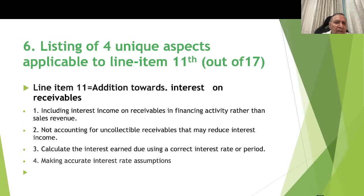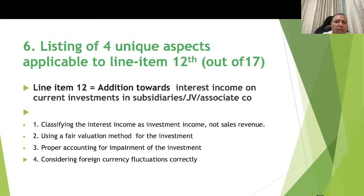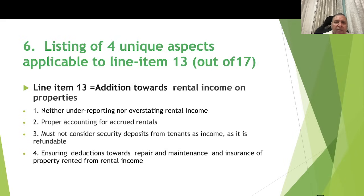For line item 11 — addition towards interest receivable — this is rarely done but where possible the key aspects are: classifying interest income on receivables as a financial activity rather than sales revenue; not accounting for uncollectable receivables that may reduce interest income; and calculating interest due using a correct interest rate and period. For line item 12 — addition towards interest income on current investment in subsidiary, JV, or associate companies — aspects include classifying interest income as investment income rather than sales revenue; using a fair valuation method for the investment; proper accounting for impairment of the investment; and correctly considering foreign currency fluctuations.